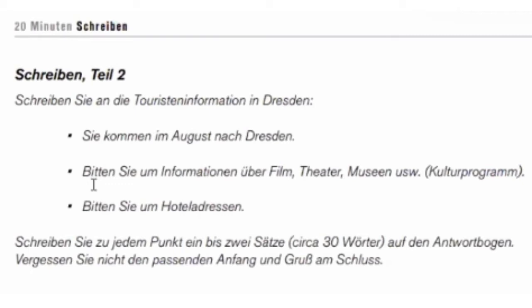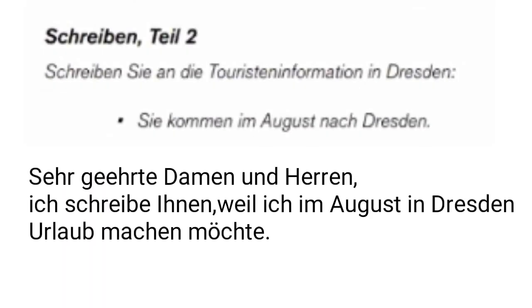So the category on how you will write: for example, you are coming in August to Dresden, requesting information about a film, theater, museum, and so on — the cultural program — and also about hotel addresses. I'll give you an example on how you will write, and we will begin with coming in August to Dresden, writing to the tourist information in Dresden.